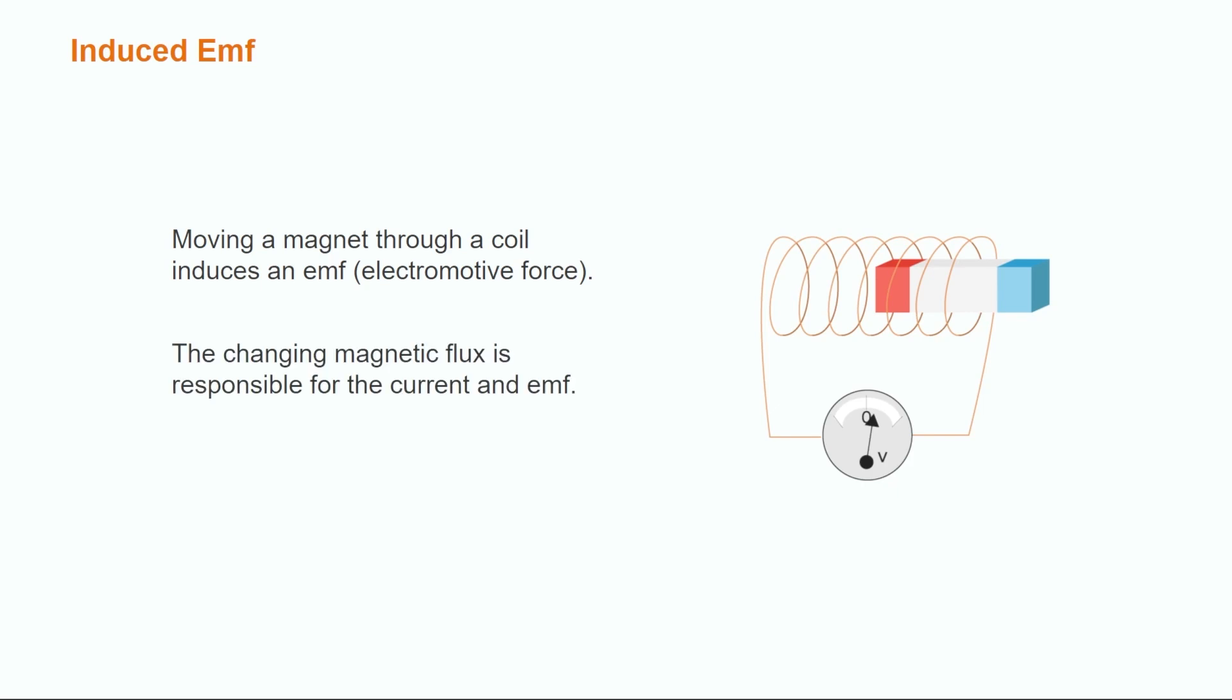Faraday realized that the changing magnetic flux is responsible for the current, since no current is induced if the coil and magnet are stationary relative to each other.